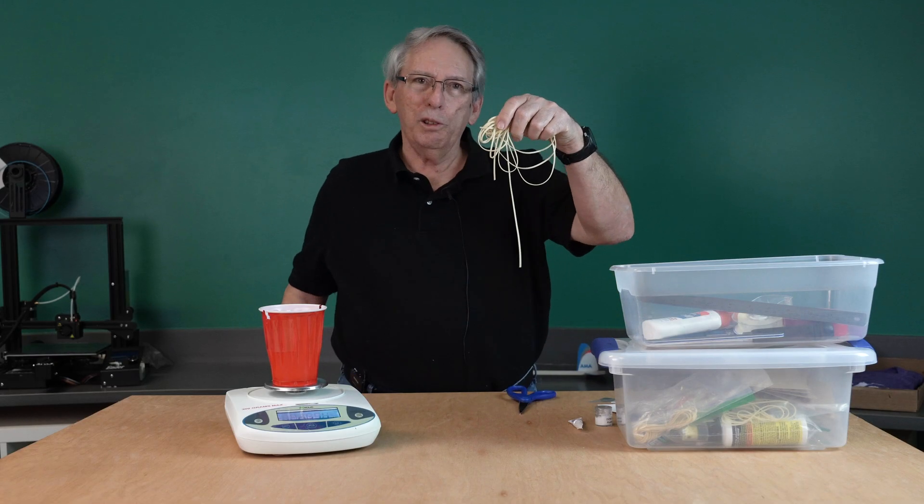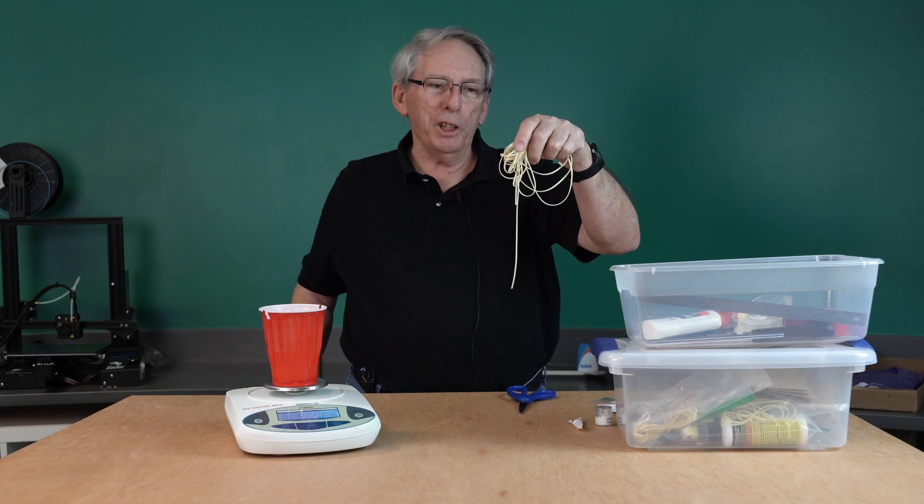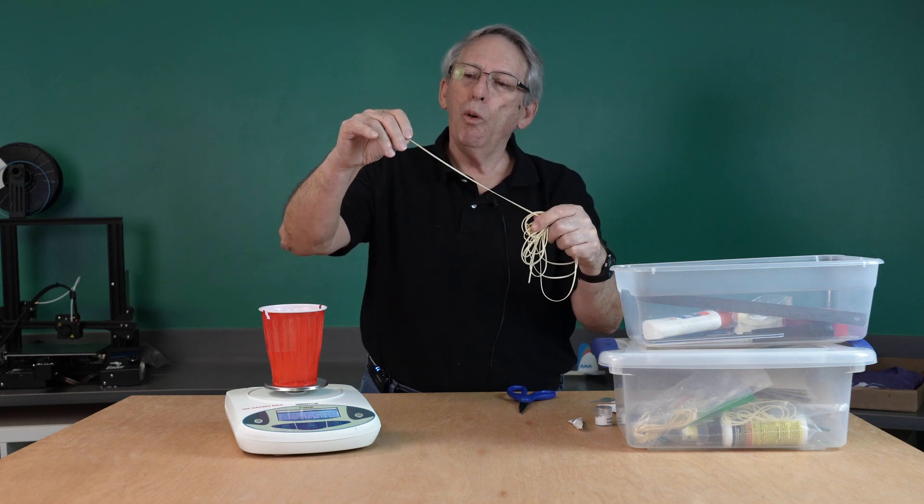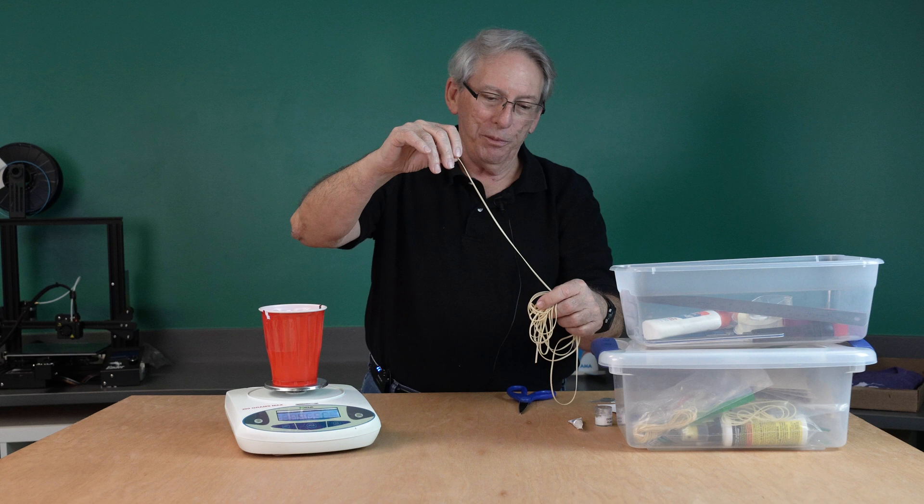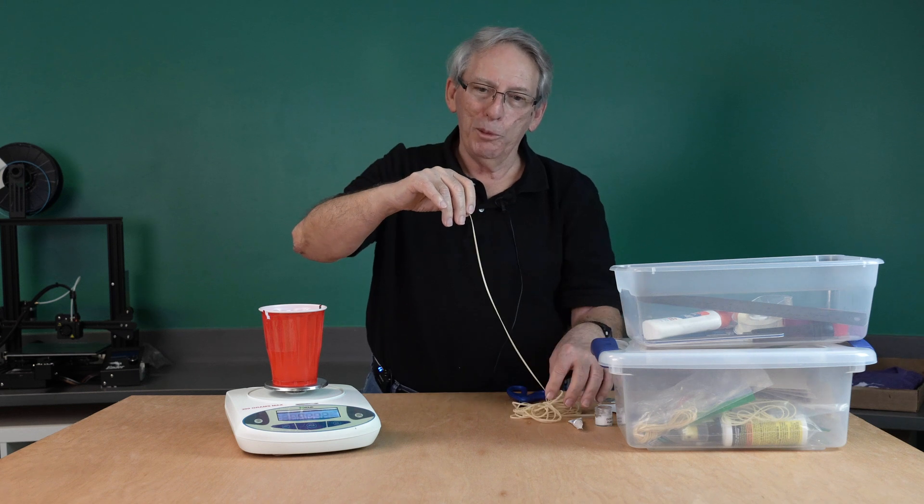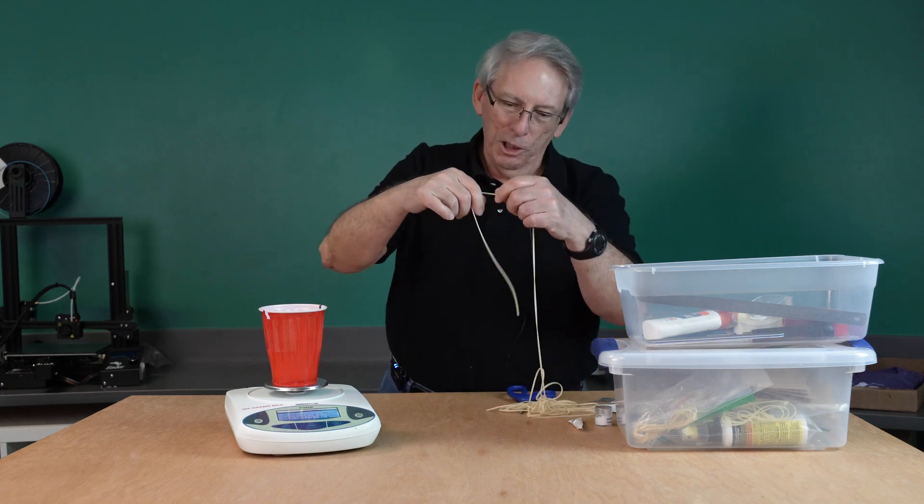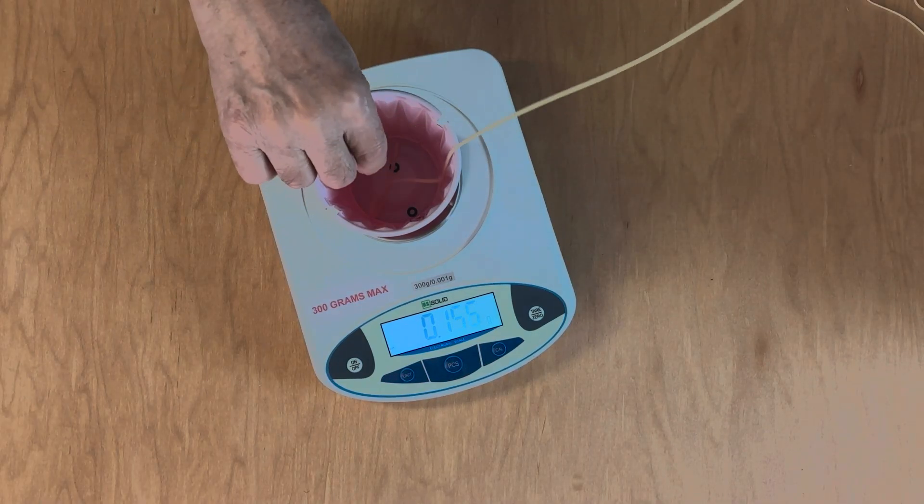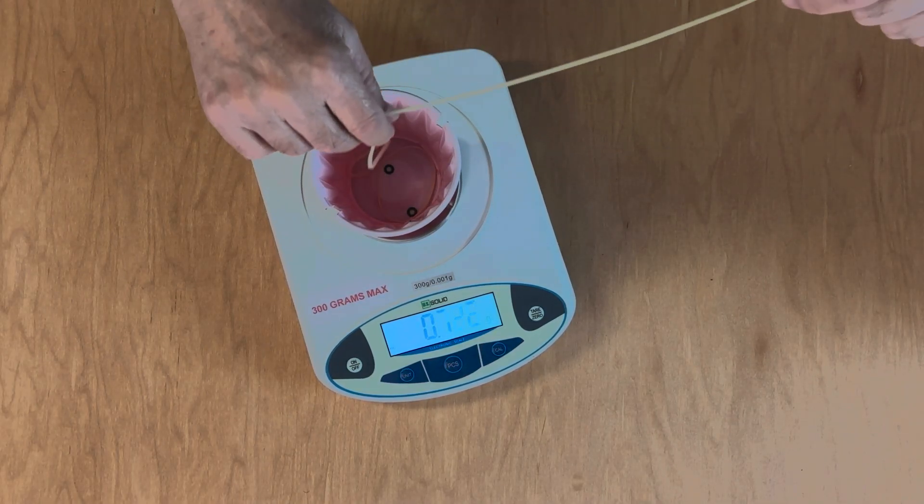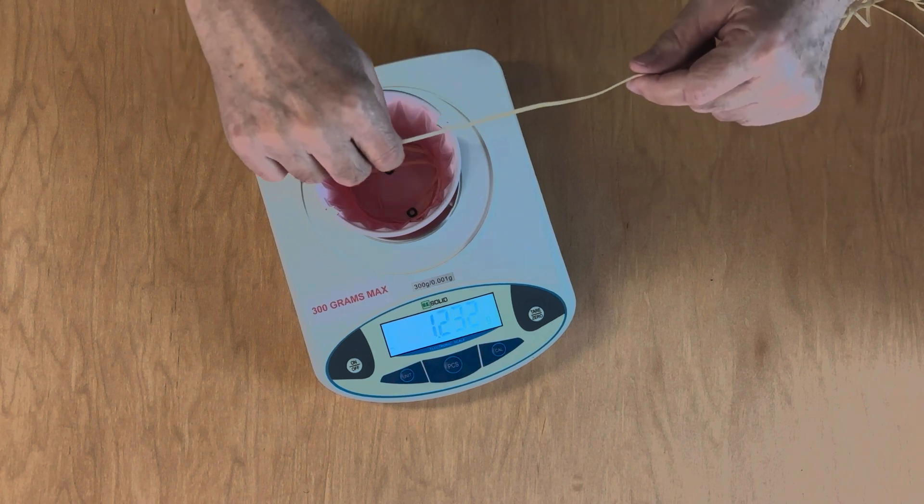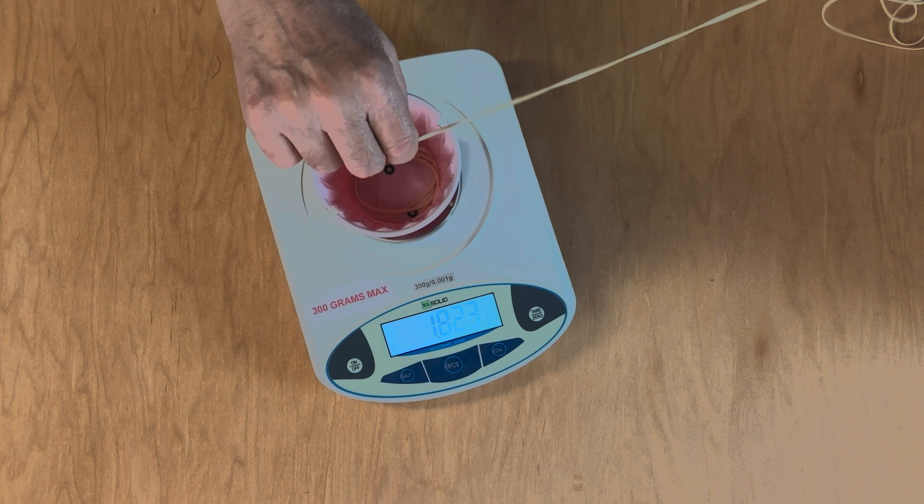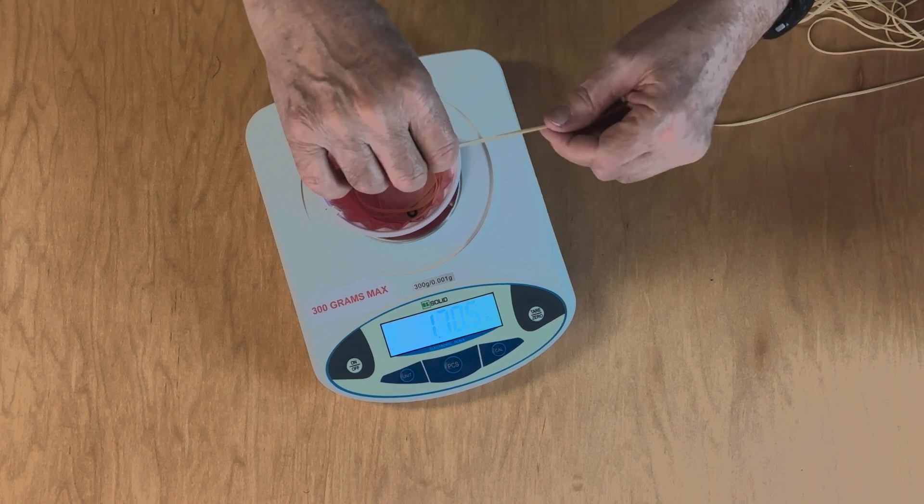The rubber that comes in the Alpha kit is 3/32nds wide rubber strip and you want two grams in the motor. So take some of the rubber and start feeding it into the cup and watch your scales until you get to two grams because two grams is the maximum weight for this motor.